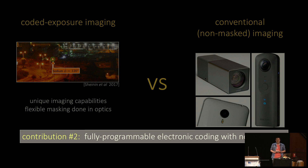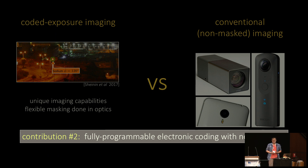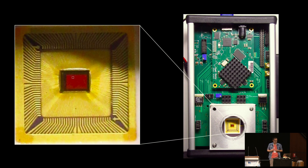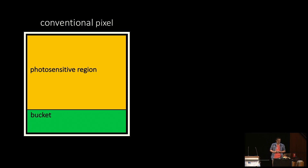The sensor we design can do all this electronically on chip, so it can go behind any optics we want, and at the same time it collects all the incident light. So how does our camera work? Let's look inside it to see how our pixels differ from those in standard video cameras.